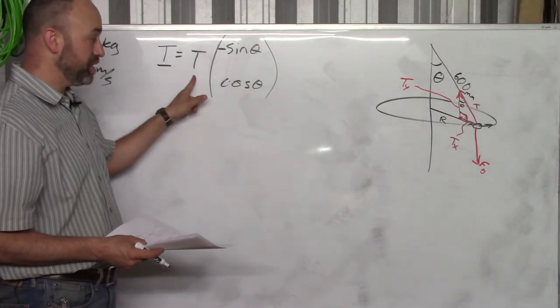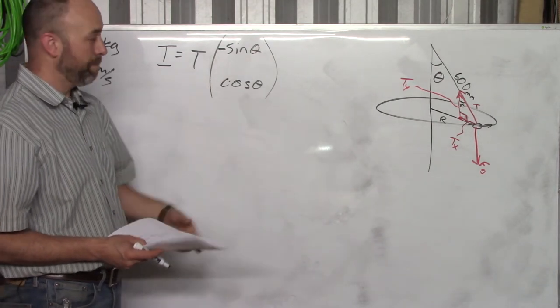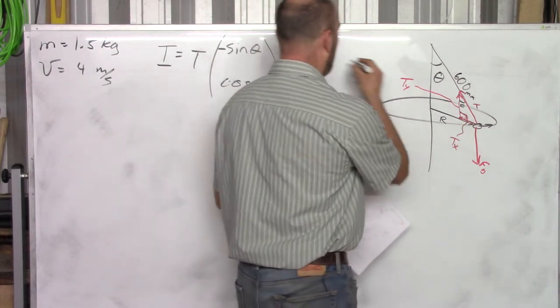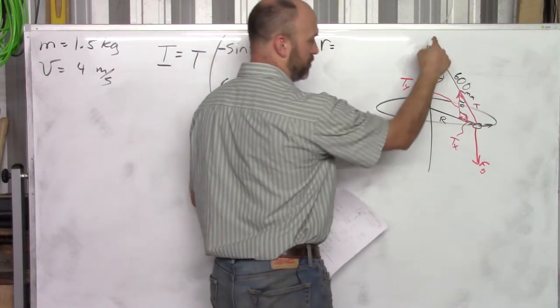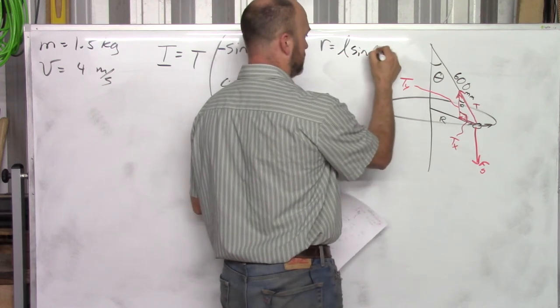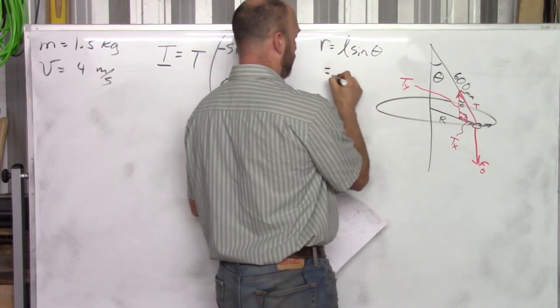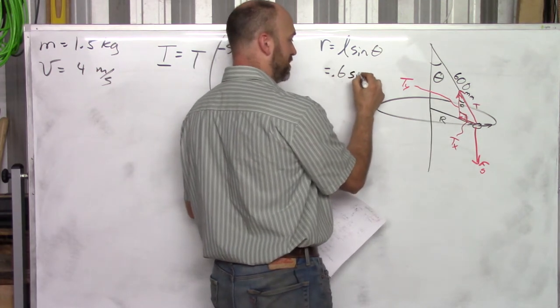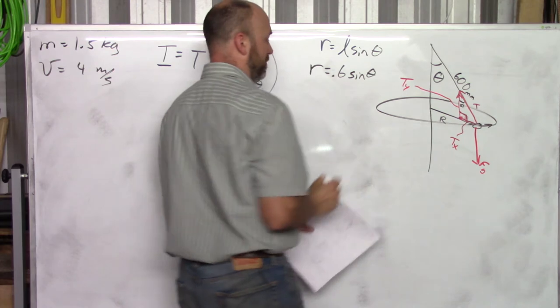Now we don't know what T is, but we do know that it's a function of the angle. Now the other piece that you have to get from this picture is this R down here. R is equal to the hypotenuse times the sine of theta. And that's 0.6, because this is 600 millimeters, which is 0.6 meters times the sine of theta. That's R.